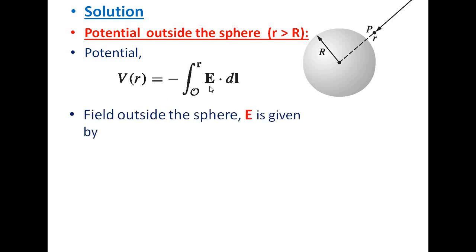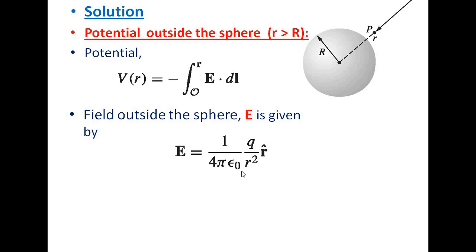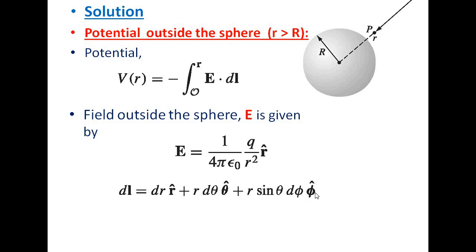The electric field outside is given by (1/4πε₀)(Q/R²)R̂. For the line element dl in spherical coordinates, we have already discussed: dl = dR R̂ + R dθ θ̂ + R sinθ dφ φ̂.